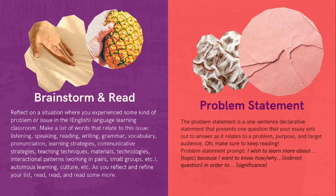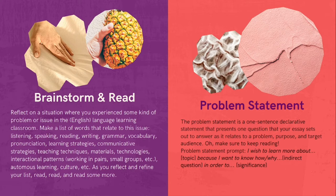We started off brainstorming a list of words and talked as a whole group about some potential words that might relate to your own particular list. We talked about words like listening and speaking, reading, writing, grammar, vocabulary, pronunciation, learning strategies, communicative strategies, teaching techniques, materials, technologies, interactional patterns like working in pairs or small groups, autonomous learning, and culture. These are just a few words that could relate to a topic. The idea is to find a combination of words — not all of them — but enough to narrow down our topic.